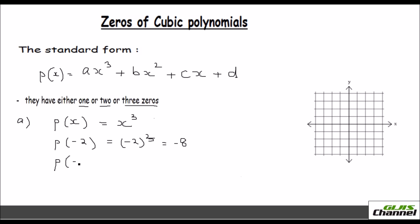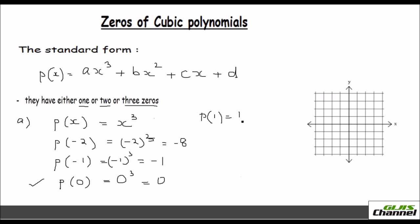P of minus 1 will be minus 1 the whole cubed, so that is equal to negative 1. And when P is 0, it is 0 cubed, so that's 0, and hence you have got 1 zero here — just 1 zero. Now P of 1, positive 1, is 1 cubed which is positive 1. And when X is 2, it is 2 cubed and you get the value 8.